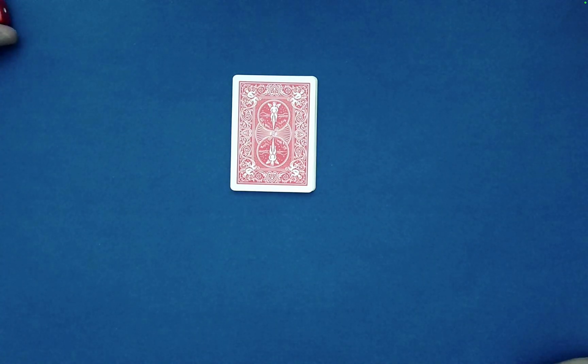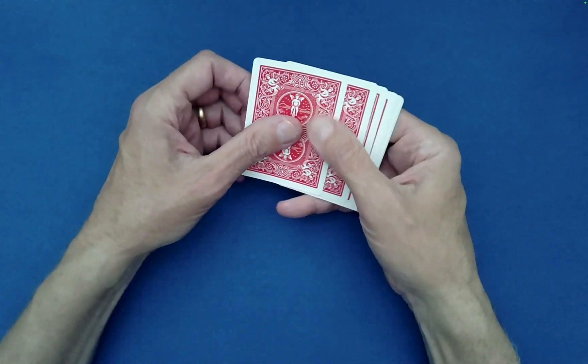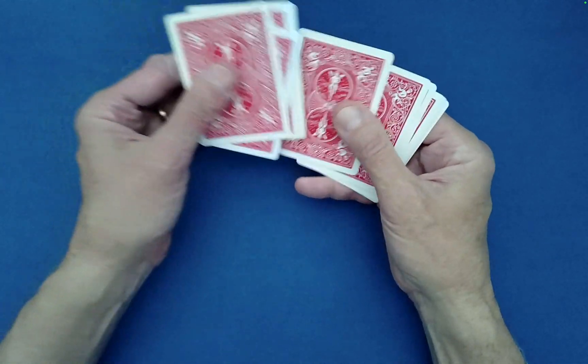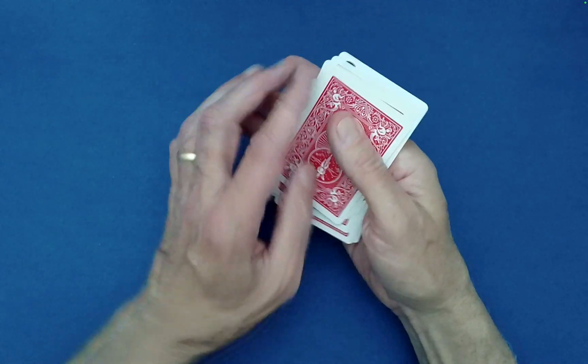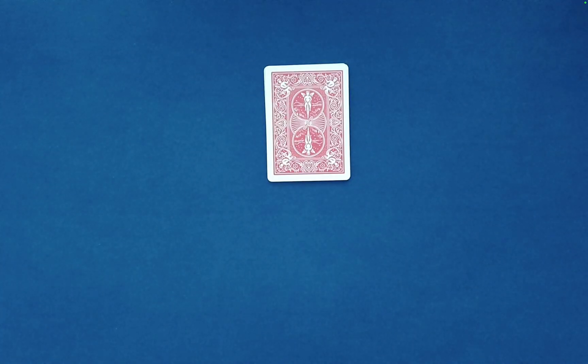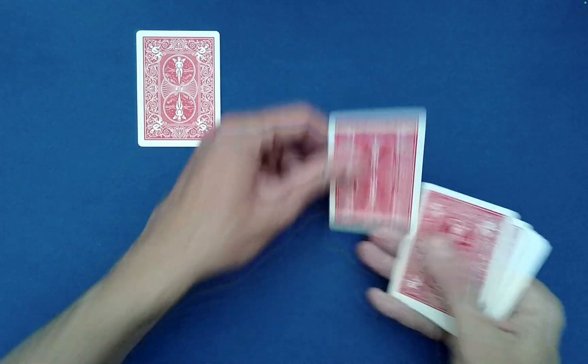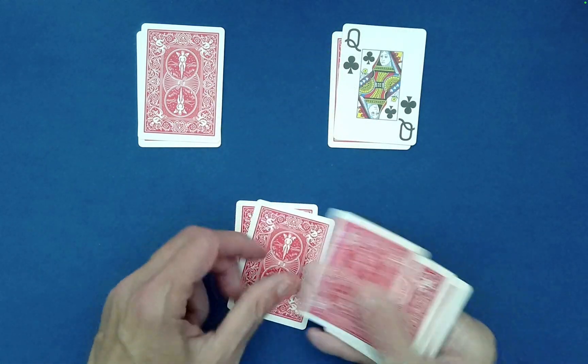Okay, so it came out to be seven. Let's see what that does for us. So what we're going to do is I'm going to count off one, two, three, four, five, six, seven and move those to the bottom. And now from here, all we're going to do is deal out the cards into three piles, kind of in a triangle configuration.